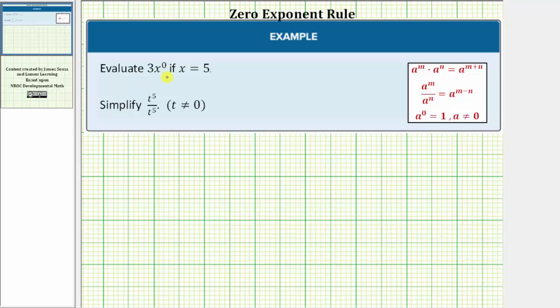To evaluate this when x equals 5, we substitute 5 for x, and therefore the expression would be 3 times 5 raised to the power of zero. And 5 raised to the power of zero is equal to 1, and therefore the expression simplifies to 3 times 1, which equals 3.